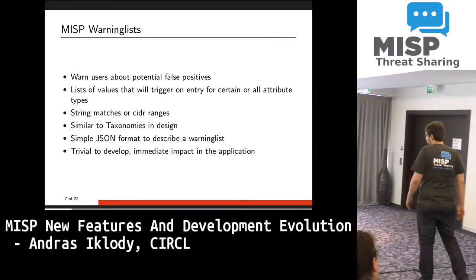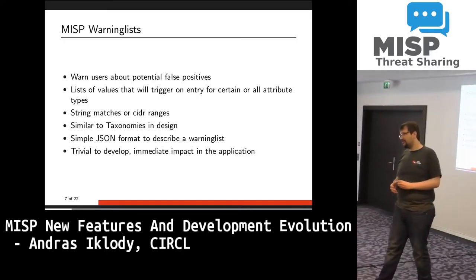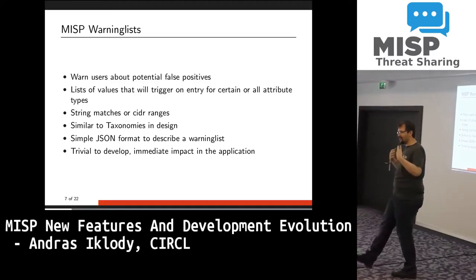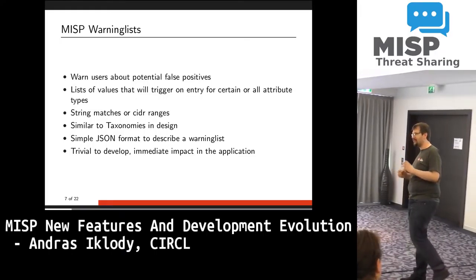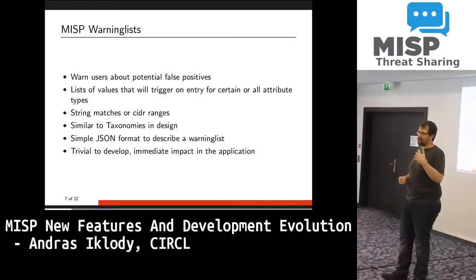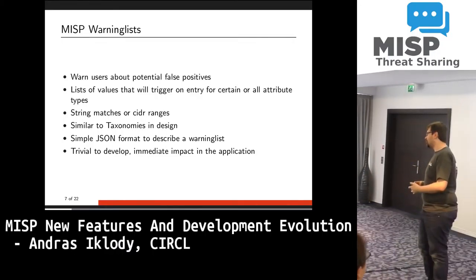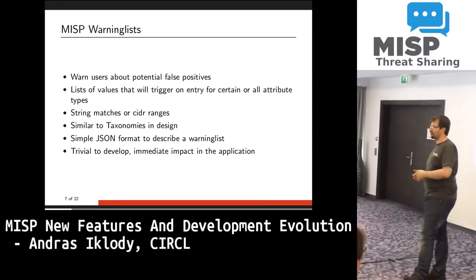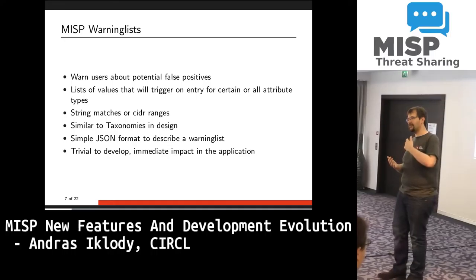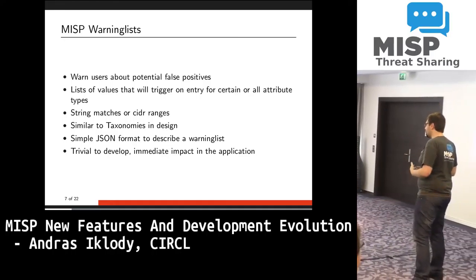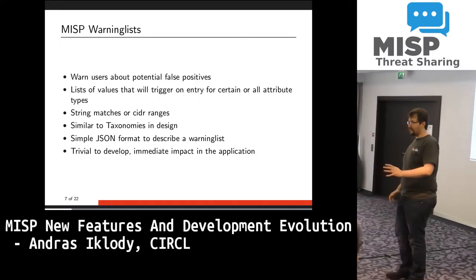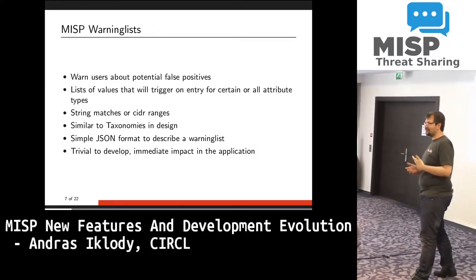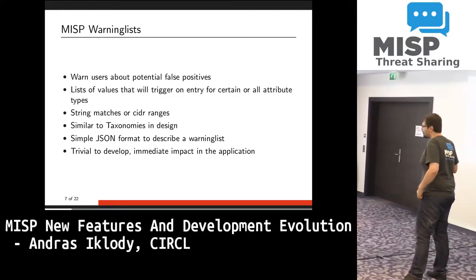The next structure we built after taxonomies were warning lists. The idea was very similar — we wanted something simple. Warning lists address the fact that very often you don't want to block something from being entered, but you want to warn the user that it is possibly a false positive. We already had a system that allowed you to block certain data from being exported, but we needed something in between: give users full control, but with feedback that something is possibly a false positive. That's what warning lists are about.